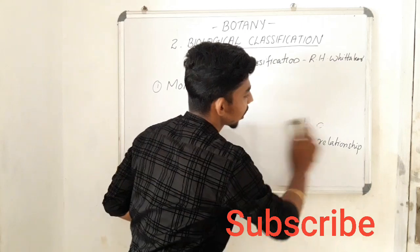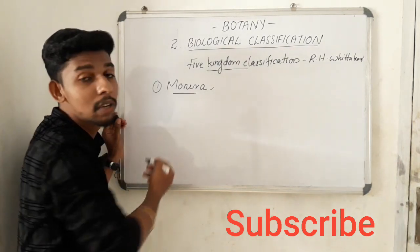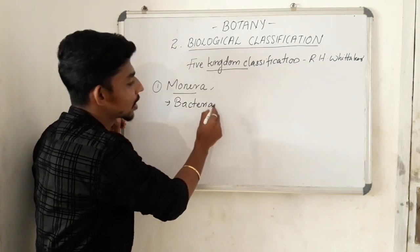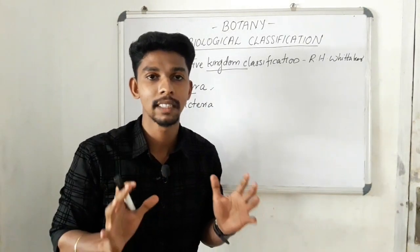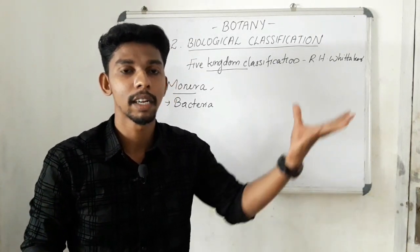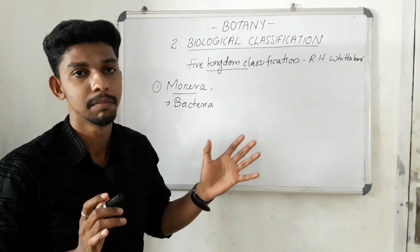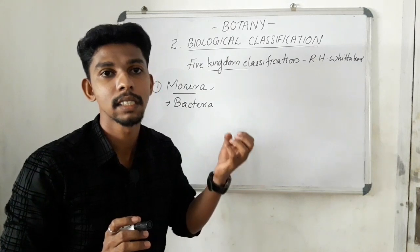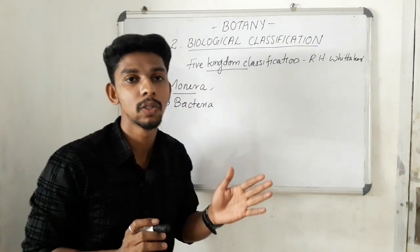The sole members of Kingdom Monera are bacteria. We can see bacteria everywhere — in hot springs, water, soil, and the atmosphere. Based on their shape, bacteria can be classified into four types.